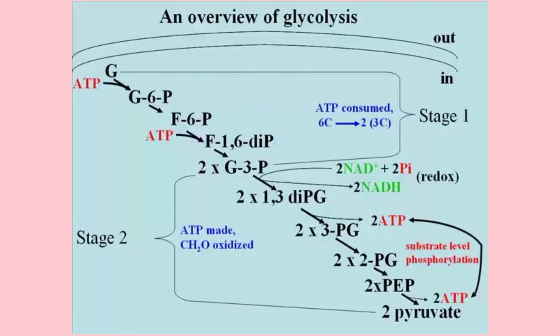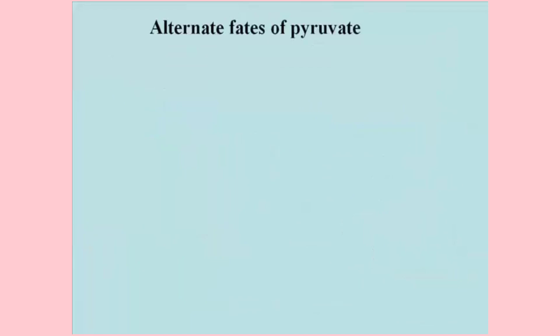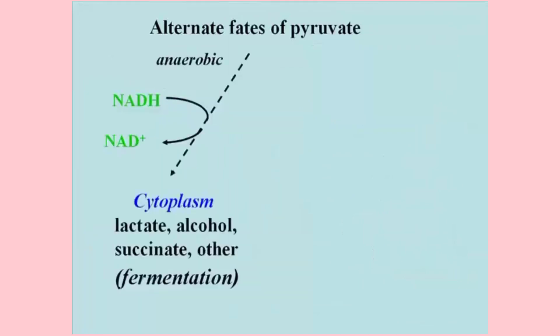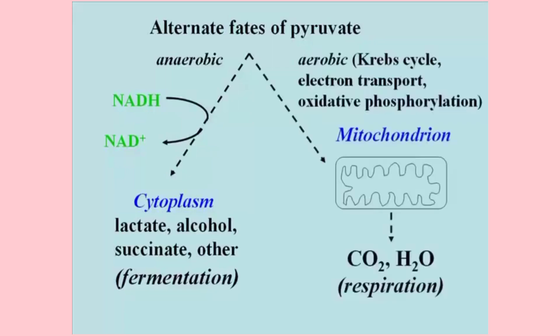There are two alternative fates for pyruvic acid. In anaerobes or in cells under anaerobic conditions, pyruvate can be reduced to generate one of several fermentation end products. Two well-known ones are ethanol and lactic acid. At the end of a fermentation, there will have been several redox reactions but in fact no net oxidation of carbohydrate.